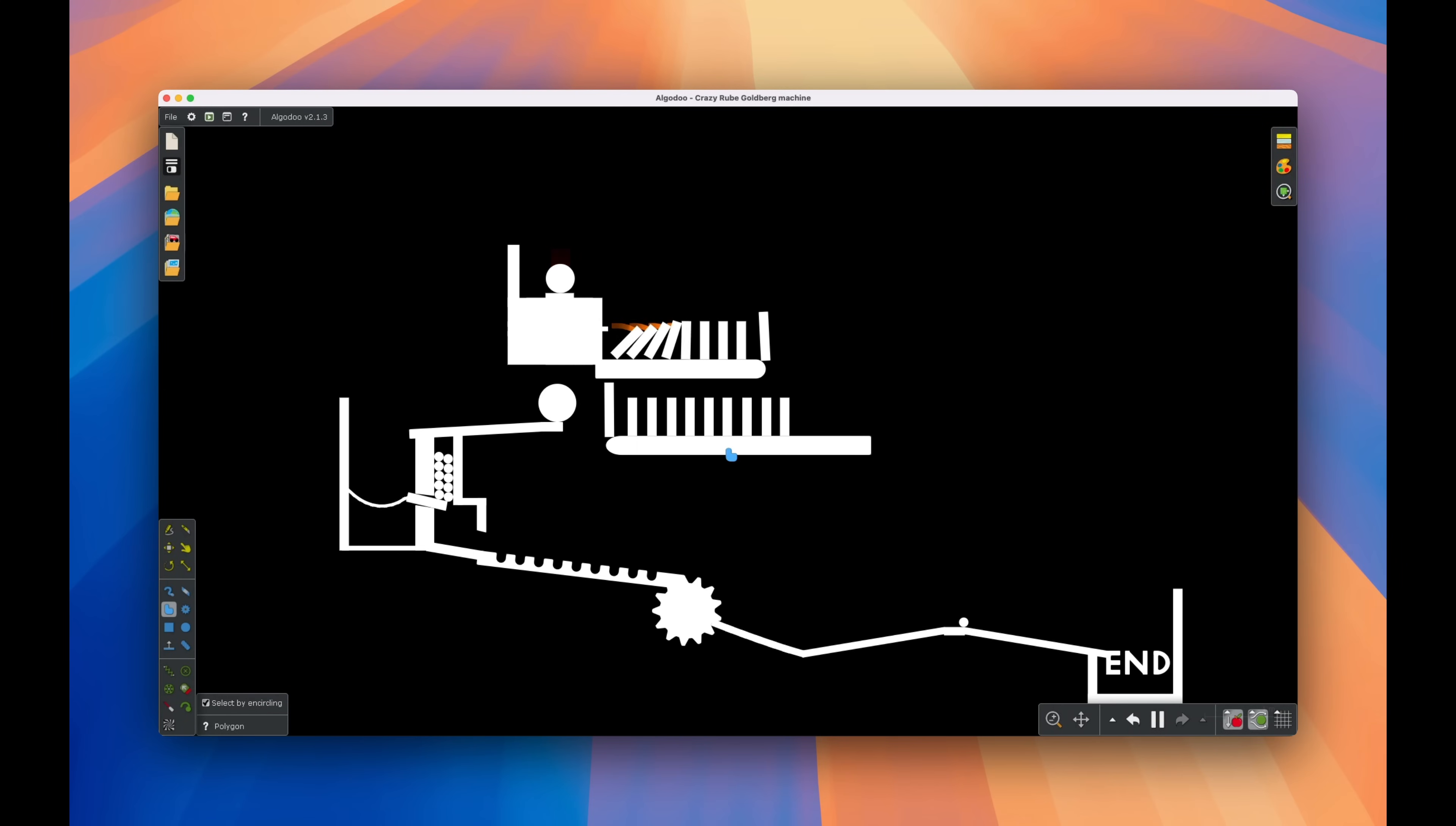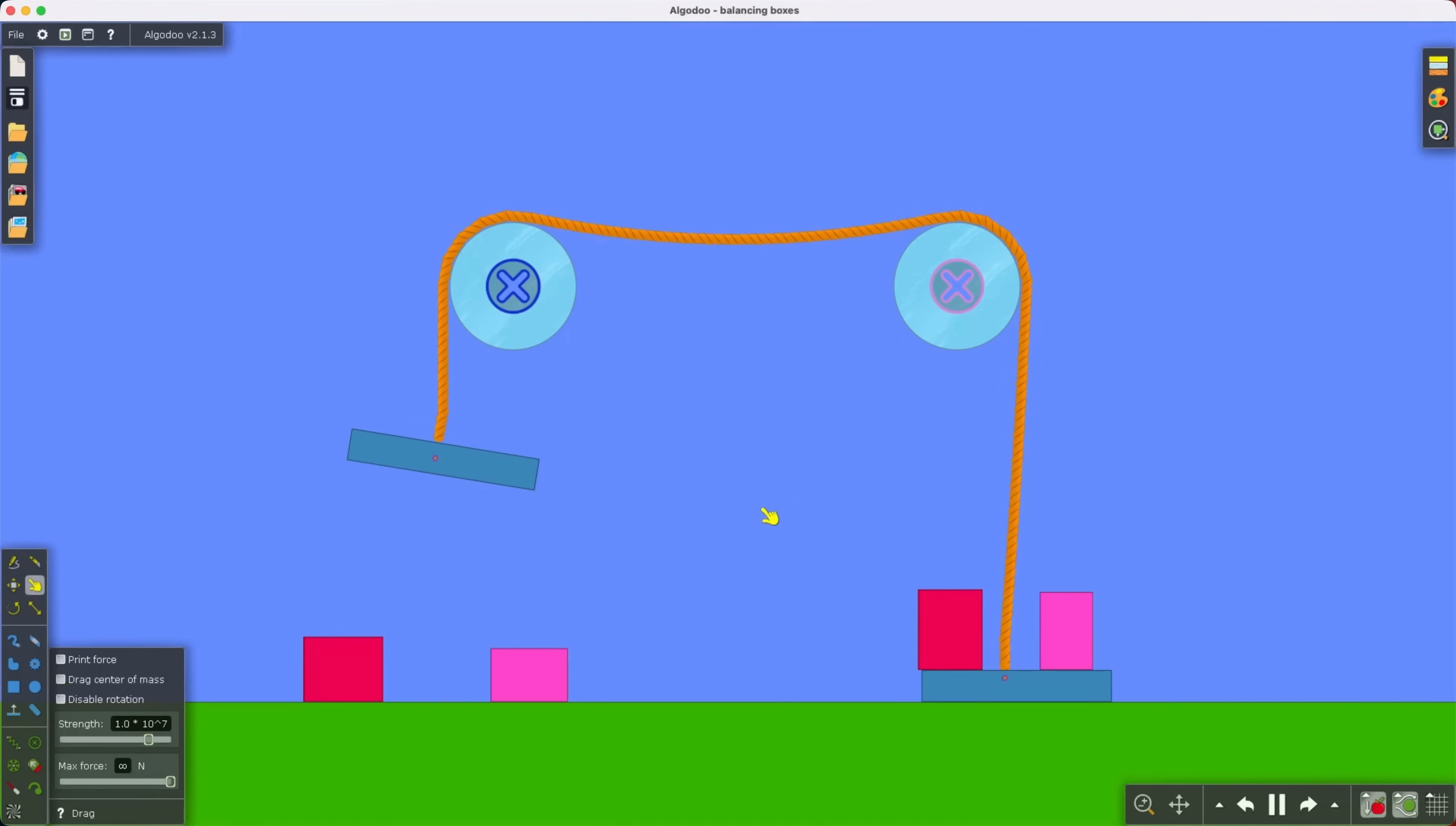Many creators use Algadoo to make these videos since it requires very little coding, but I think Unity is going to be a better choice for me. Still, if you're absolutely allergic to coding but want to play around with some physics, Algadoo is free on Windows and Mac and seems pretty fun.